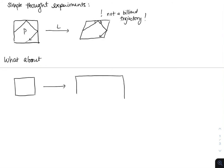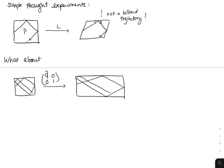What about instead if we took a square that's sent to a rectangle by a linear stretch? So let's say we just stretched in the x direction by some factor A. If we take some billiard trajectory in the square, do we think it's going to go to a billiard trajectory in the rectangle by this linear map? From this picture, it would seem that it is sent to a billiard trajectory.